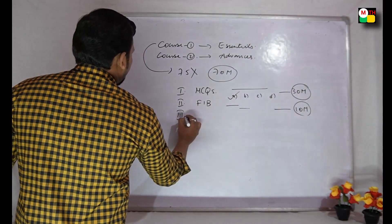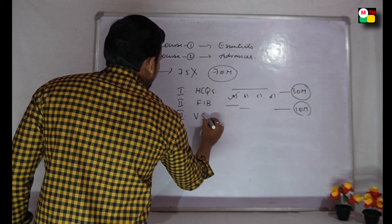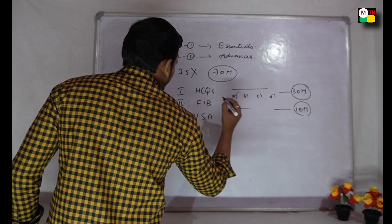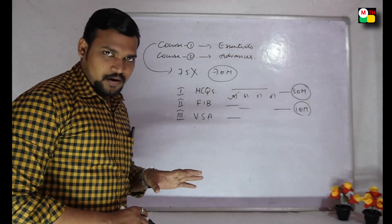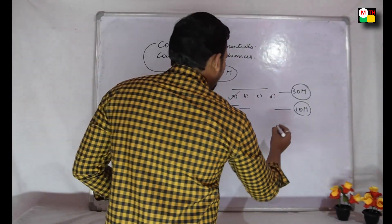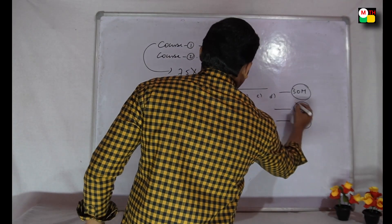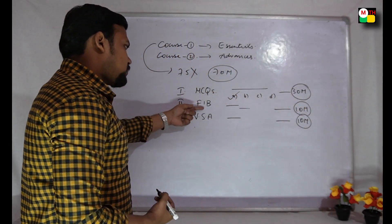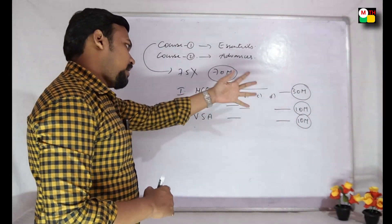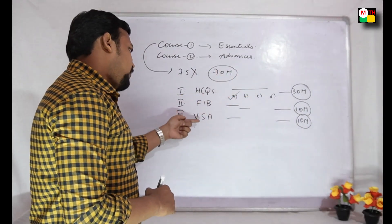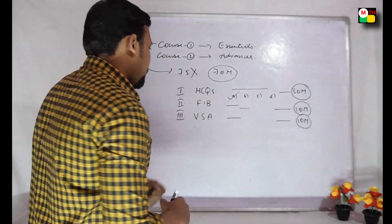Third Roman section: Very Short Answer Questions — VSAQs. Very short answers. This section is worth 10 marks — 10 questions. Fill in the blanks was 10 marks, and VSAQs — very short answer questions — also carry 10 marks.